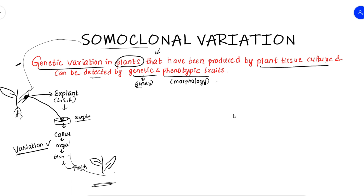Morphological traits include leaf shape, color, fruit, color, and taste. We know the characters — genetic characteristics involve genes. For example, the number of chromosomes can change — this is a genetic variation. We also know the phenotypic expression.